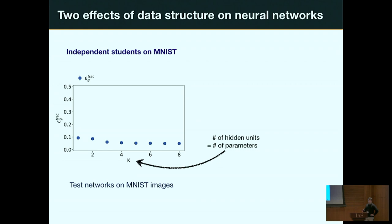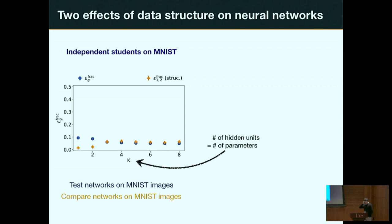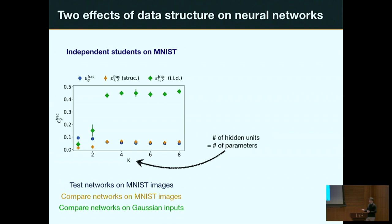As you increase the number of parameters, performance gets better and then levels off. Now comparing the two networks: for MNIST inputs, the number of images on which they disagree is roughly in line with the number they misclassify. But when I test them on Gaussian inputs — over all of R^P — as you increase model size, the two networks quickly learn completely different functions, even as the generalization error goes down.